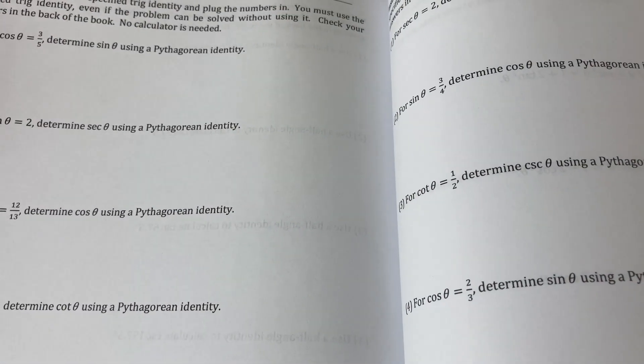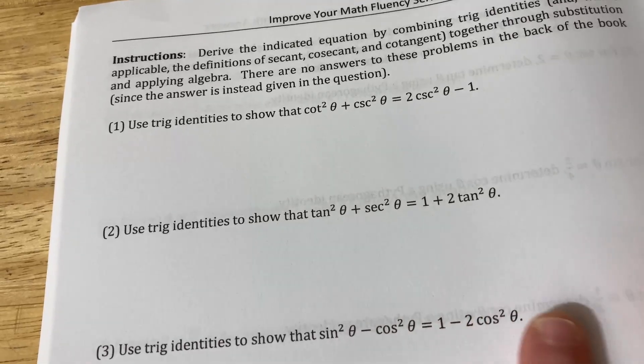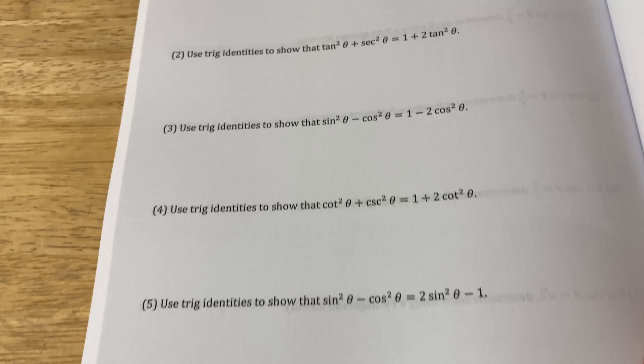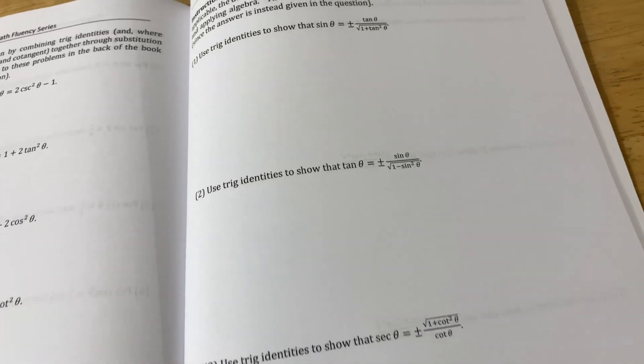Then Pythagorean identities. So just tons of practice with identities. And then here you have some actual identities that you actually have to verify. And so that's really useful. You know, one thing I'm wondering is, does Chris have solutions to these verification problems?